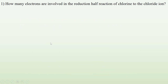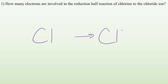Let's take a look. How many electrons are involved in the reduction half reaction of chlorine to chloride ions? I'm going to start with chlorine and end up as a chloride ion. Now chlorine is one of those diatomic molecules, one of the 'BrINClHOF' elements, so it can't ever just be Cl⁰ — it's got to be Cl₂⁰.